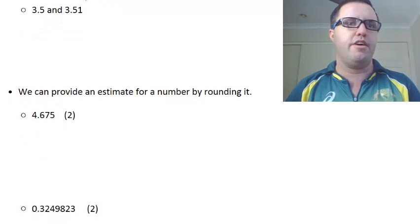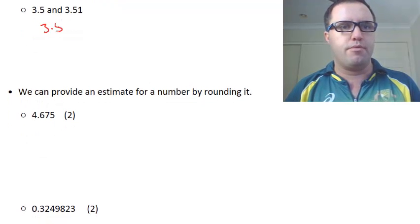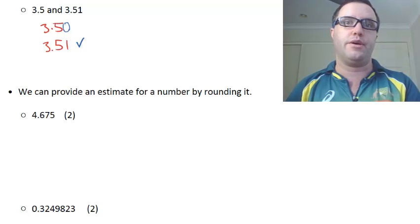3.5 and 3.51, so 3.5, 3.51, as we move down, 3 and 3, there's a decimal point, 5 and 5, ah, space, well, 0 is the same as the space, between 0 and 1, 1 is larger, bang, there we go.